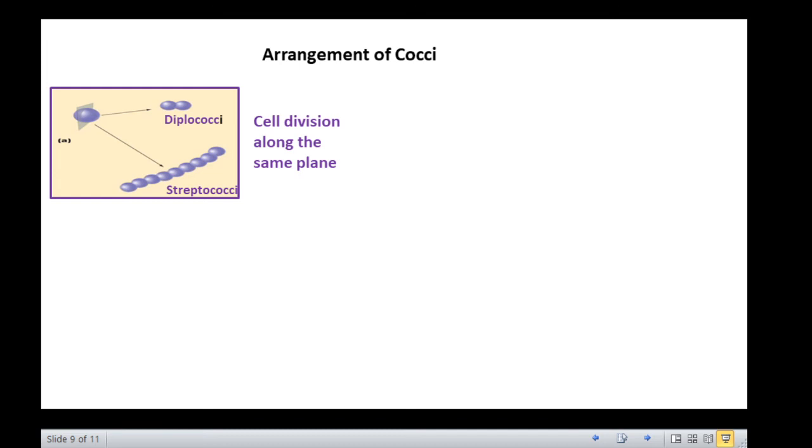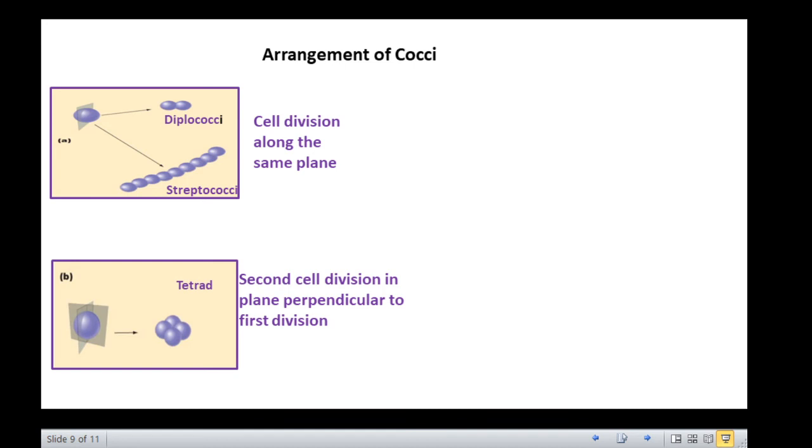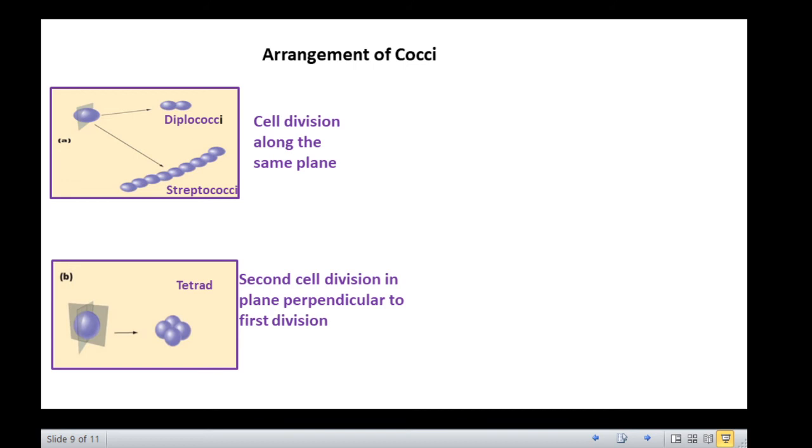Now, imagine a single round bacterium which divides and the two cells hang together. Suppose the second set of cell division occurs at right angles to the first. You would now have four cells in a square packet. This is how tetrads are formed. Now, consider that each cell then divides in the third plane. You now have a cube-shaped packet of eight cells. These are called sarcinae.